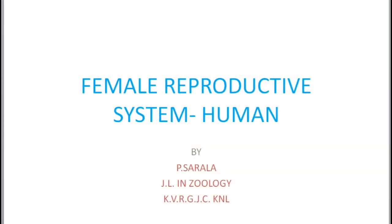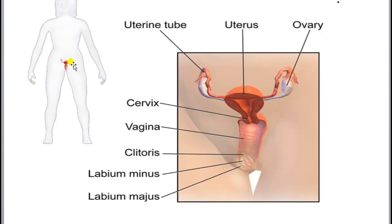Welcome to one more class of geology. Today we are going to learn about the female reproductive system in human beings. The female reproductive system in human beings is present in the lower abdominal region or the pelvic region.